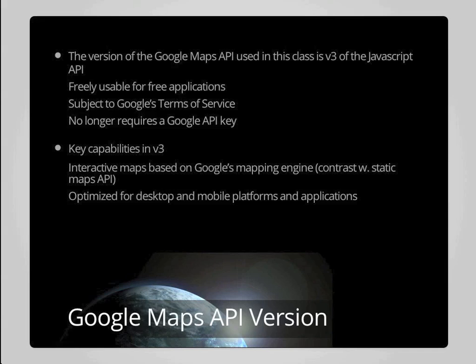One significant change in version 3 of the API is that applications communicating with Google's services are no longer required to have an API key — essentially a specific code provided by Google to enable requests to their systems. If you're looking at older documentation for the Google Maps API, you may see references to this API key. But the current version does not require it, though it's something you may encounter in online information or other published references.